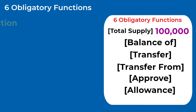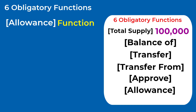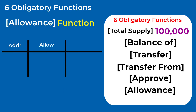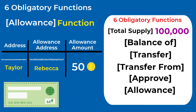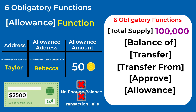Finally, there is the Allowance function, which tells you the number of tokens someone has allowed a DApp or another person to take from their wallet. For example, you can use Taylor's address and the Allowance function to check the amount of tokens he allowed Rebecca to take from his wallet. You can think of it like a bank check — the amount allowed can be higher than the current balance, and if there isn't enough balance, the transaction fails and Rebecca doesn't receive any tokens.